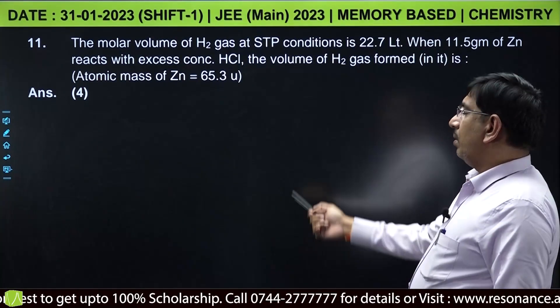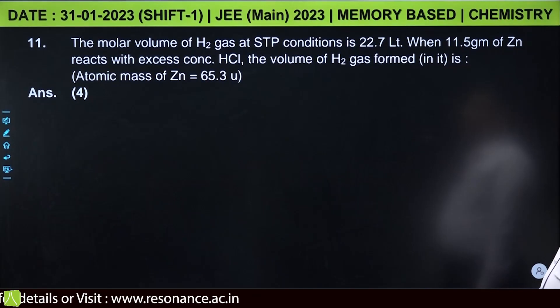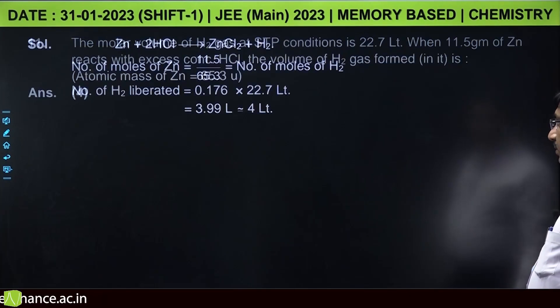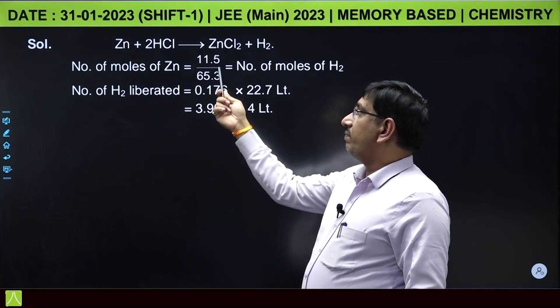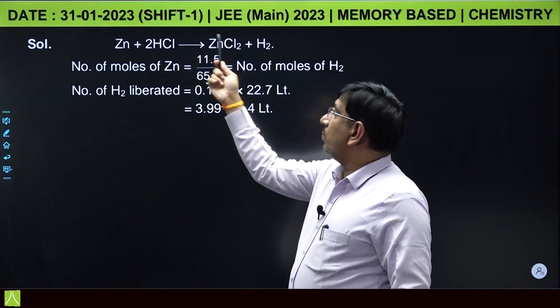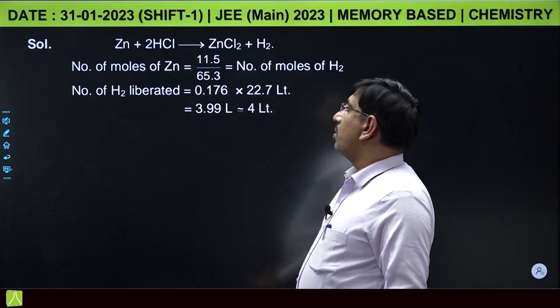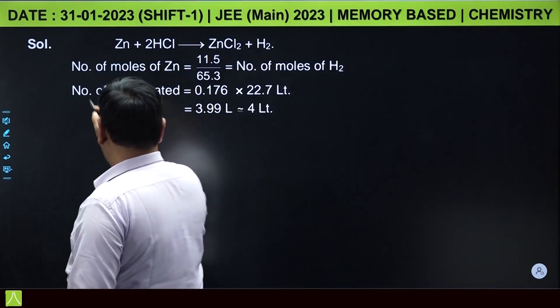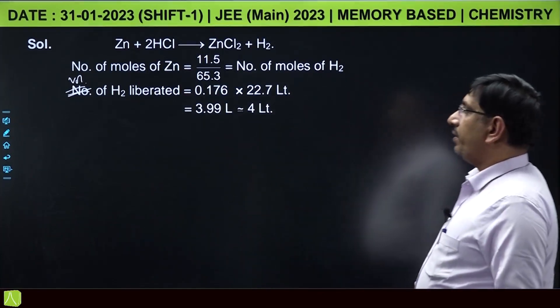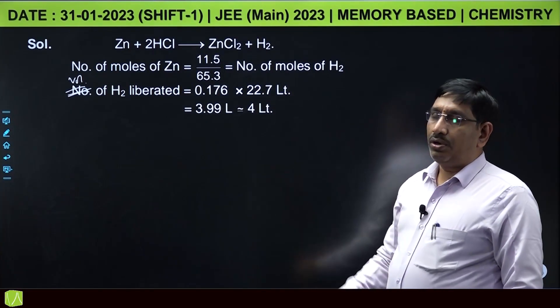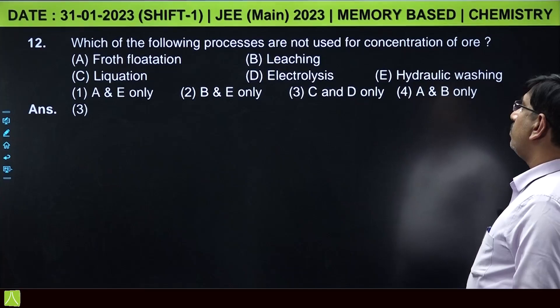This is simple mole concept question. The molar volume of hydrogen gas at STP conditions is 22.7 liter. When 11.5 grams of zinc reacts with concentrated HCl, the volume of hydrogen gas formed is: when zinc reacts with HCl, it is zinc giving zinc chloride and hydrogen. Number of moles of zinc 11.5 by 65.3, this is equal to number of moles of hydrogen only. Now number of moles of the volume of hydrogen liberated will be equal to 0.16 into 22.7. Volume of hydrogen liberated is 3.99 liter, and if you round off it will be 4 liter. Here the molar volume is given as 22.7 liter.